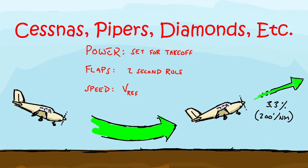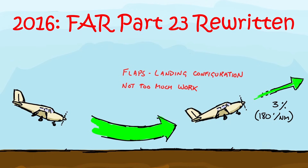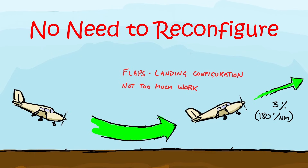That covers the vast majority of airplanes we're likely to encounter. But a recent rewrite of FAR Part 23 has made changes to go-around climb gradients. Brand new airplanes now need to make takeoff power, but only a climb gradient of 180 feet per nautical mile needs to be achieved — and that's with landing flaps. So brand new airplanes certified under the latest rewrite of Part 23 do not need a reconfiguration down low in order to clear the trees.